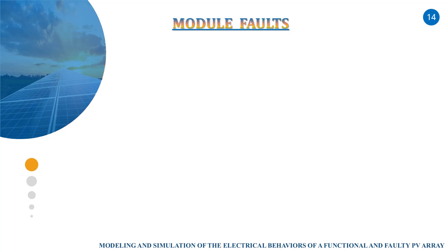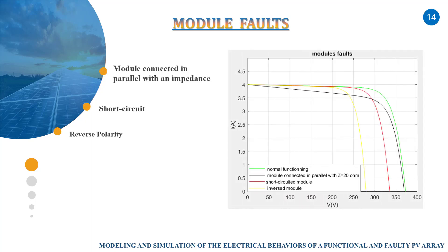Let's move to model faults. In a model, all faults are associated with connecting a model in a PV string. So, the model can be short circuit, connected in parallel with an impedance or can have reverse polarity. Similarly, the figure shows the behavior of the array in each type of those faults.